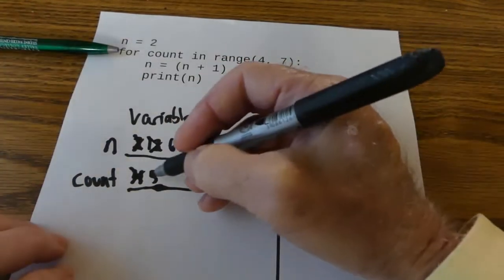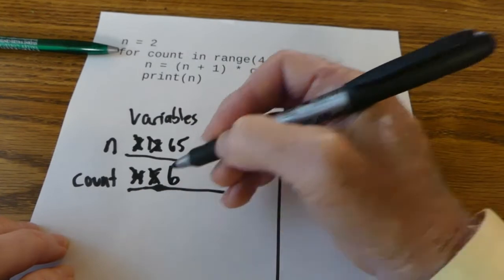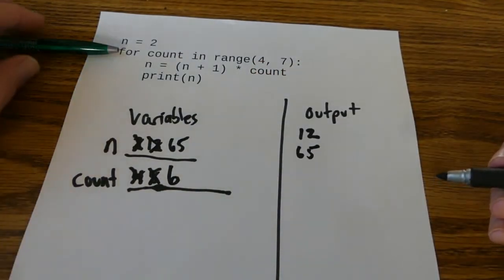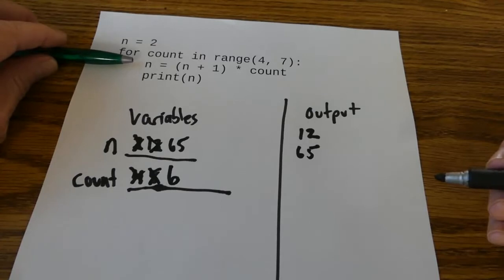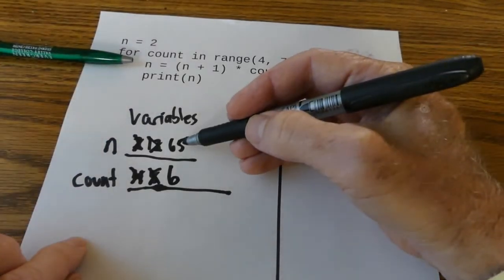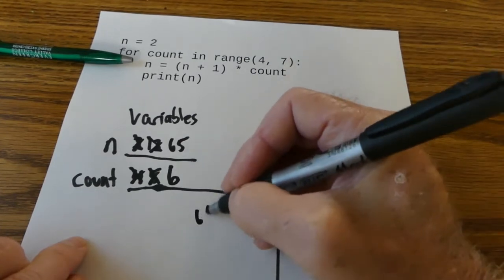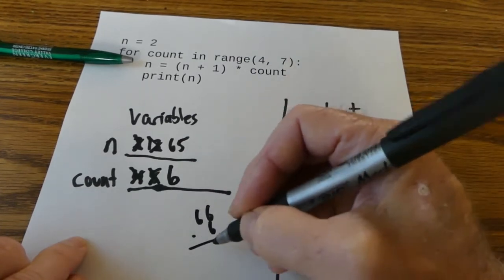I come back to the top of my loop and count becomes 6. That's still in my range. And now the next line. 65 plus 1 is 66. So 66 times 6 which I'm going to have to do by hand here because I can't do it in my head.